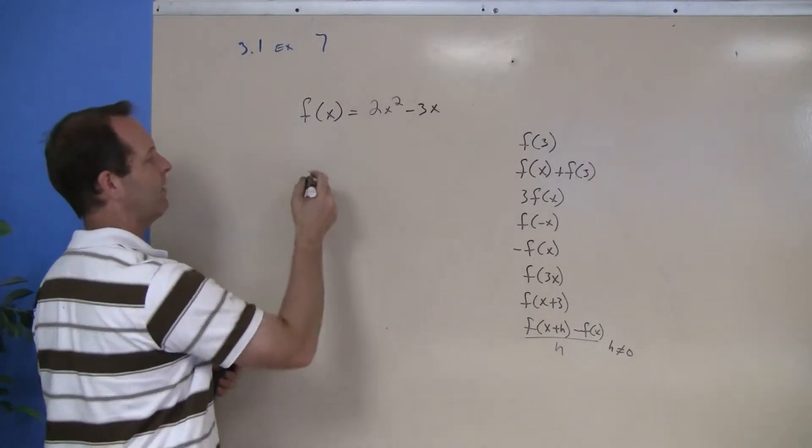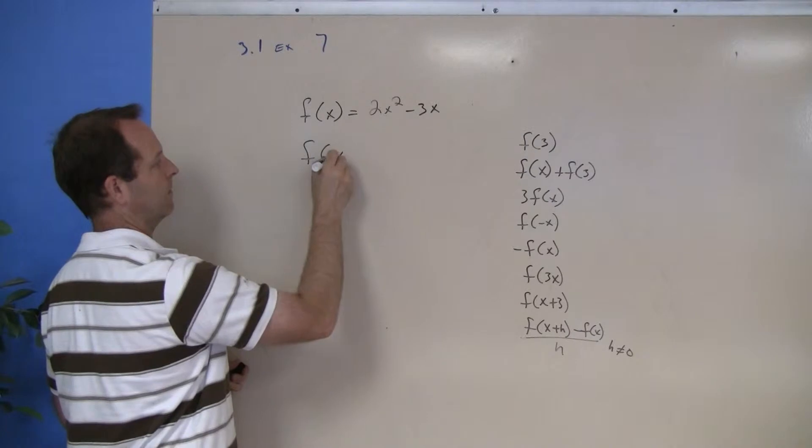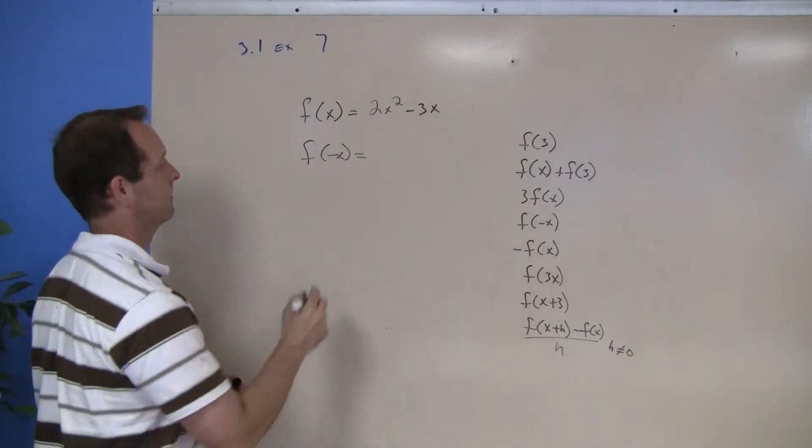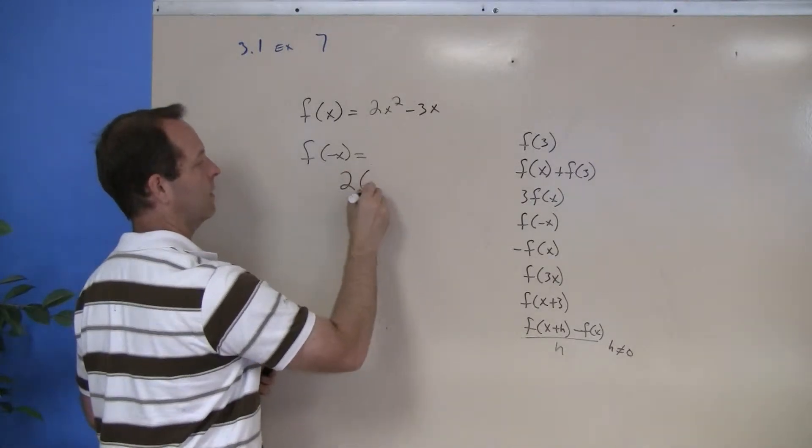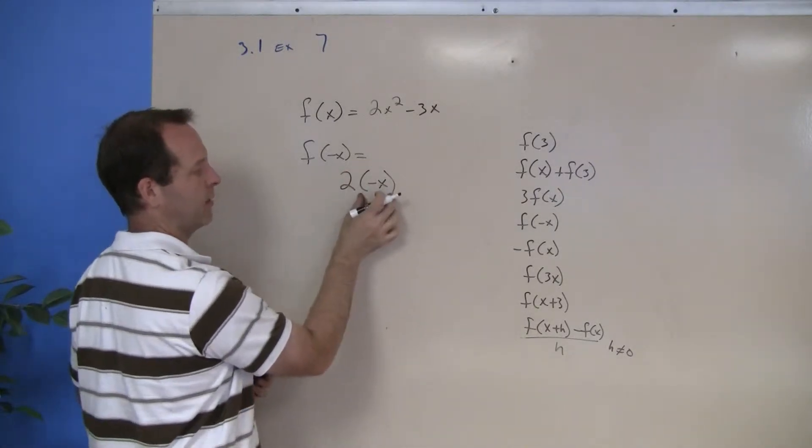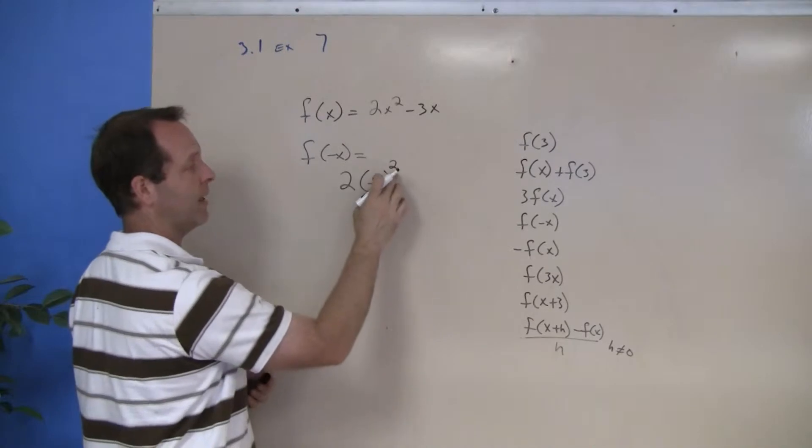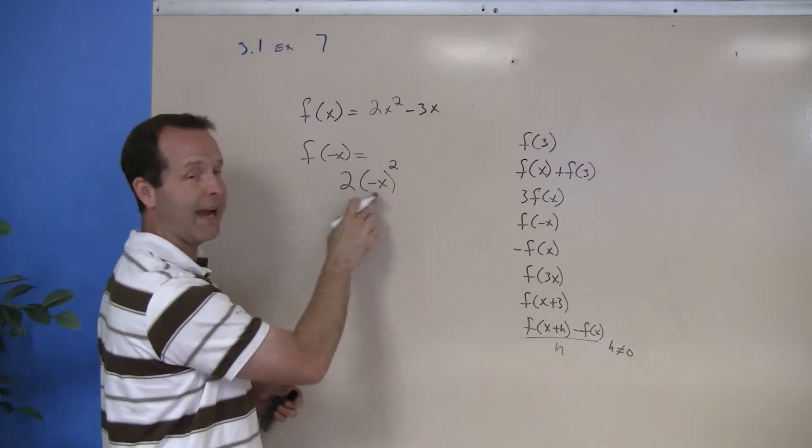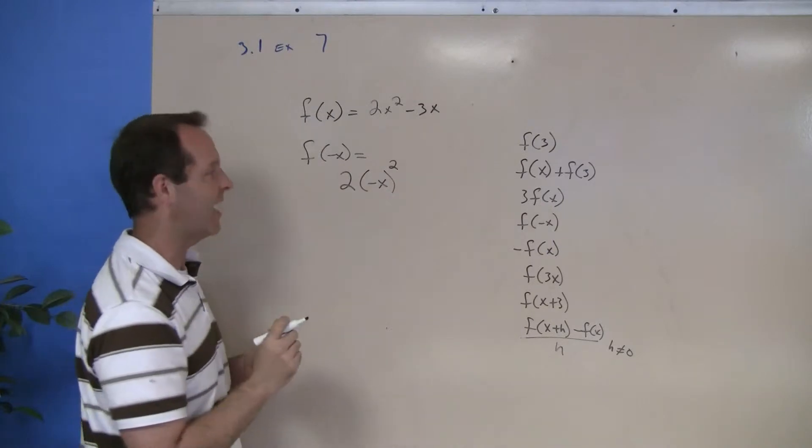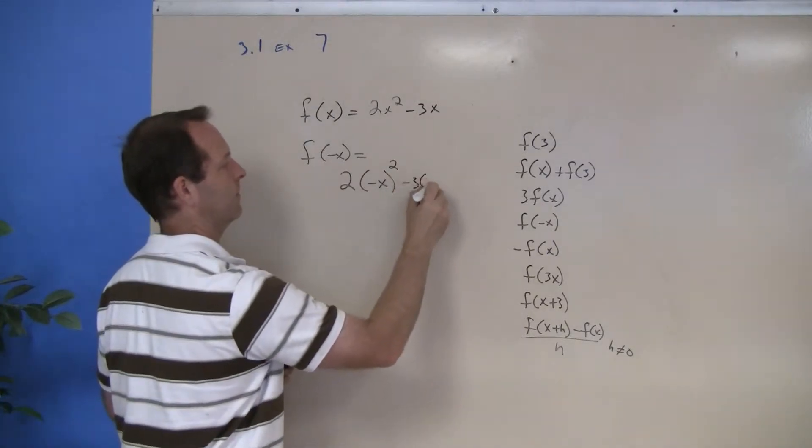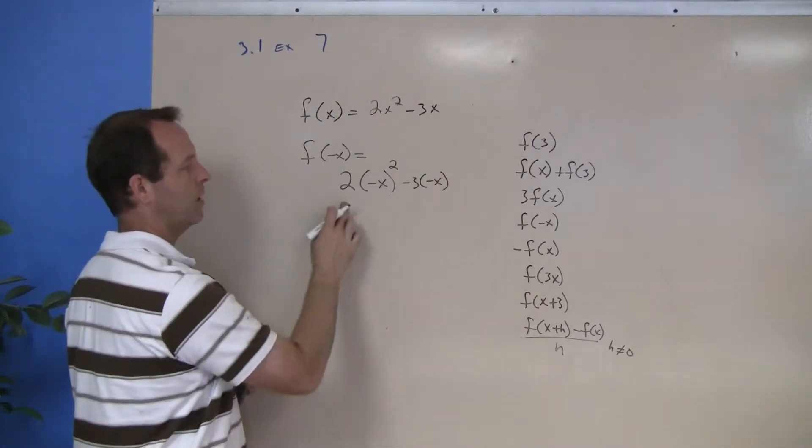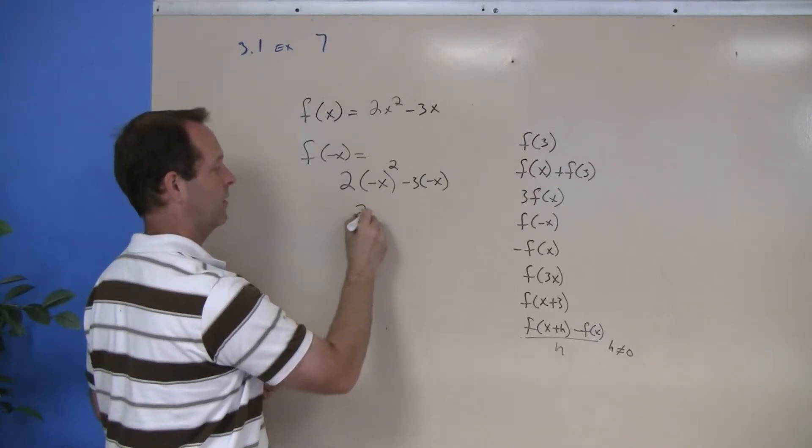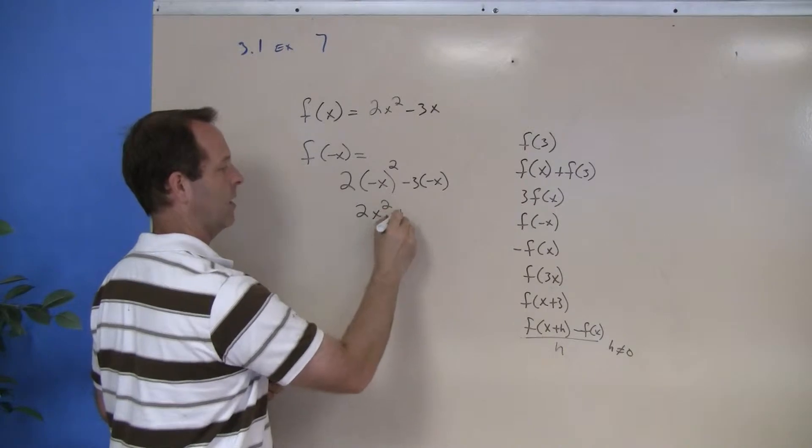f(negative x). Let's insert a negative x everywhere I see an x. 2 times negative x - notice I'm putting parenthesis around it, and specifically because this term is being squared. So I have to make sure the entire negative x is being squared, not just the x. 2 times negative x squared - negative x squared is x squared - plus the 3x.